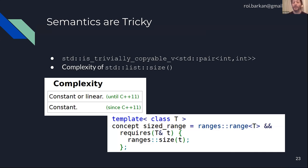In C++20 there's a concept called sized_range. A sized_range is a range that has a size method — those are the syntactic requirements. But the semantic definition is that the type must implement the size method and it must be O(1) constant time complexity. If I try to use a container with O(n) size as a sized_range, that's actually undefined behavior.